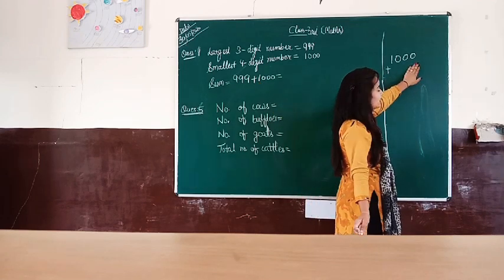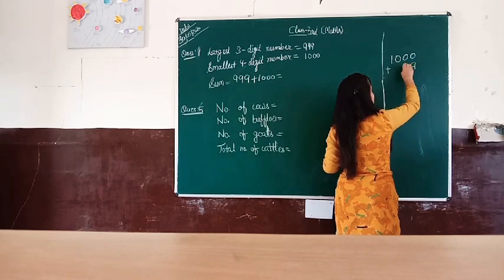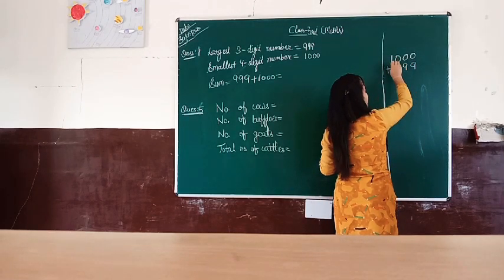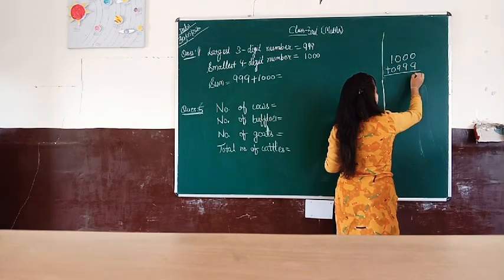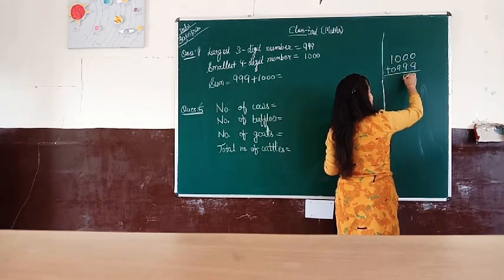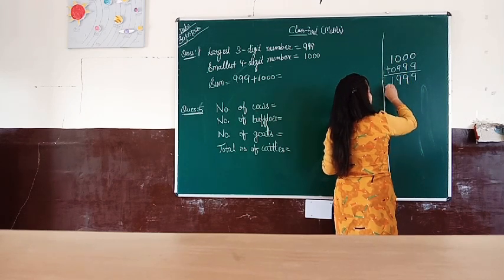How do we do this? We will start from the right hand side. 9 plus 0 is 9, 9 plus 0 is 9, 9 plus 0 is 9, and then 1 plus 0 is 1.